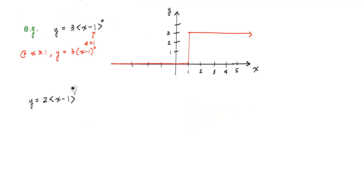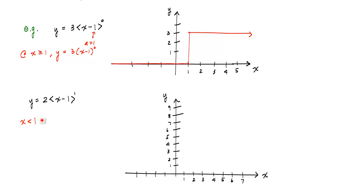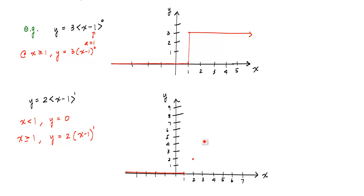Let's take one more example. Consider y equals two times the singularity function x minus one to the first power. For x less than one, y equals two times zero — just a flat line. Once x is greater than or equal to one, y becomes two times x minus one to the first power. So at x equals one, this is zero; at x equals two, this is two; at x equals three, this is four. This describes a linear function after x equals one — a linearly distributed load.